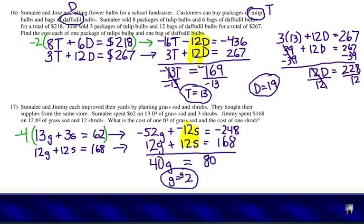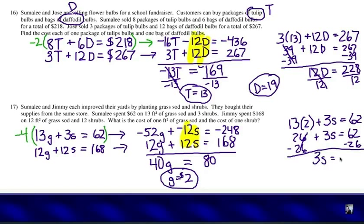Let's put the label on there, dollars. Substitute it in and let's choose the first equation. Instead of 13G, it's going to be 13 times 2, because we know that G equals 2 dollars. Plus 3S equals 62. Let's solve that. 26 plus 3S equals 62. Subtract 26 from each side, and we're going to have 3S equals 36. So S must be 12. 12 dollars for each shrub. So, 2 and 12.